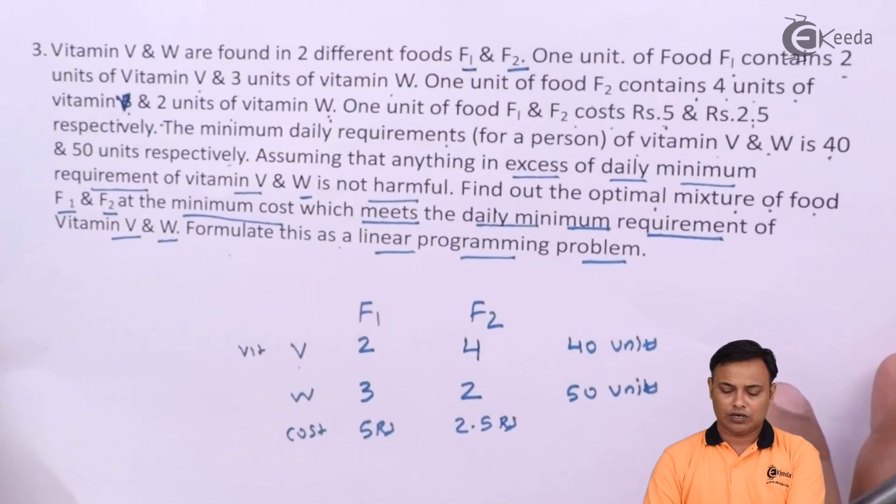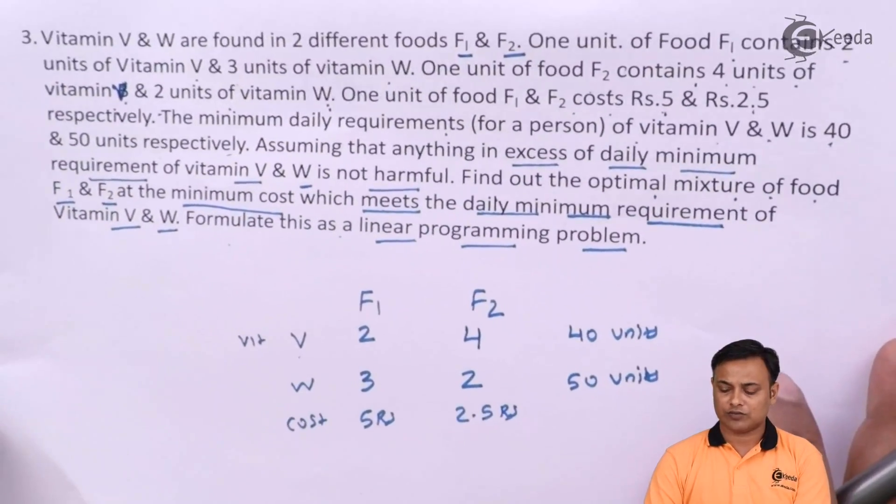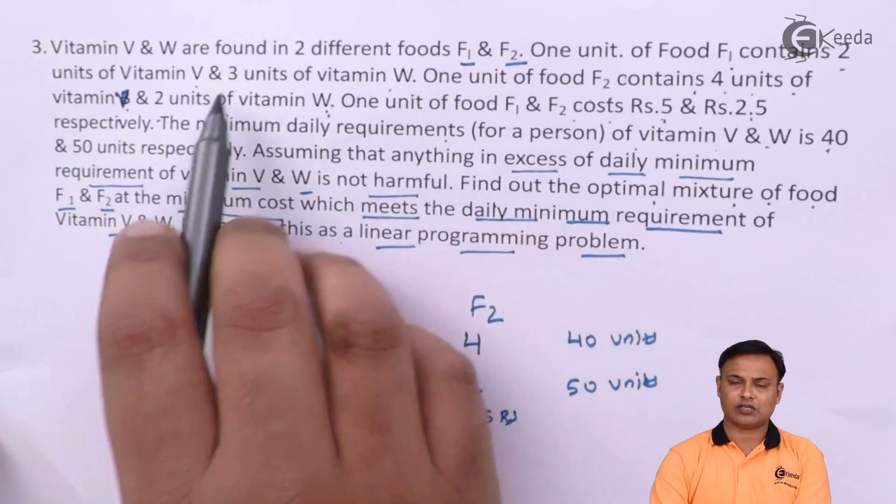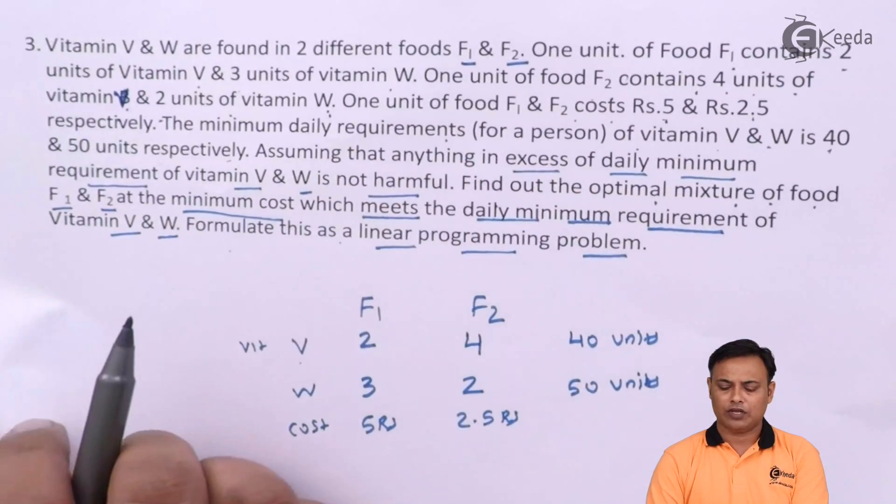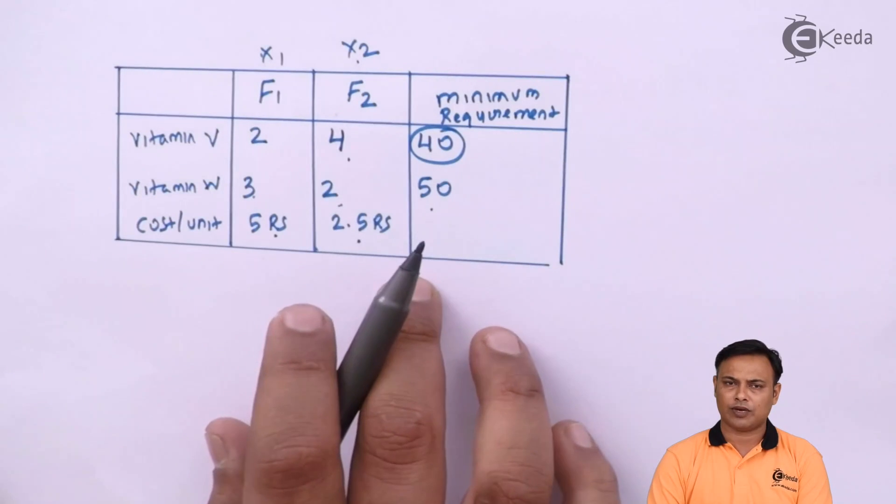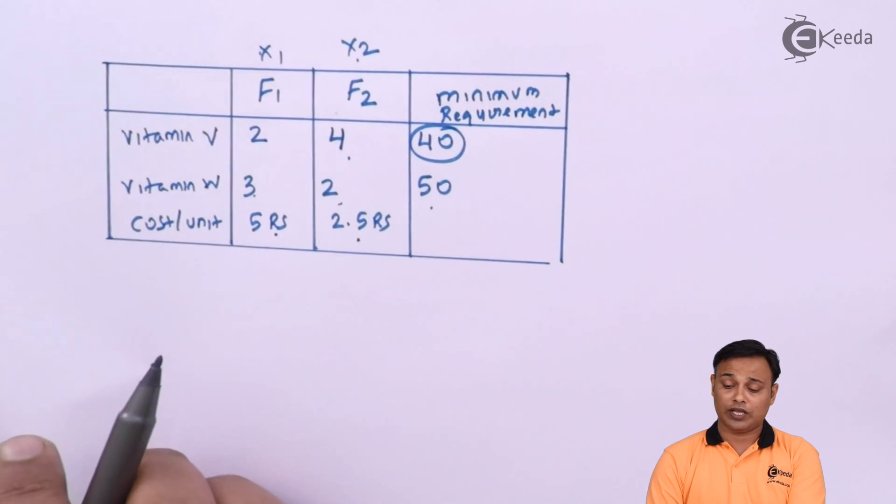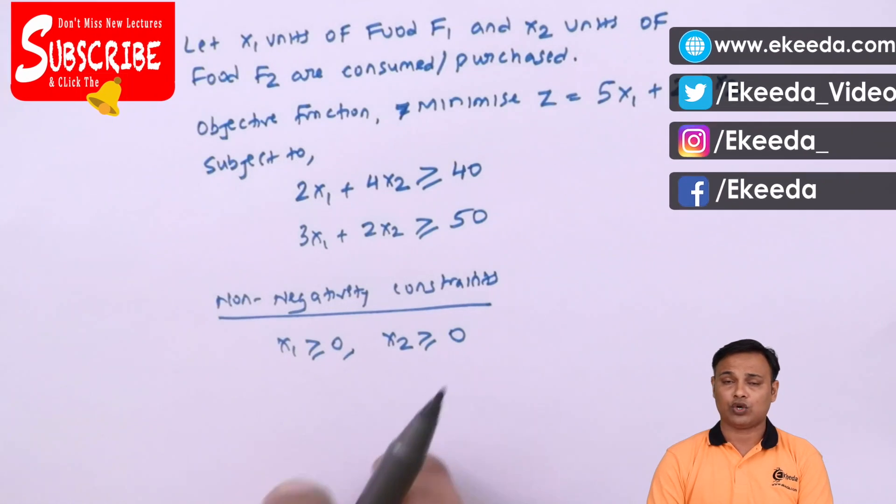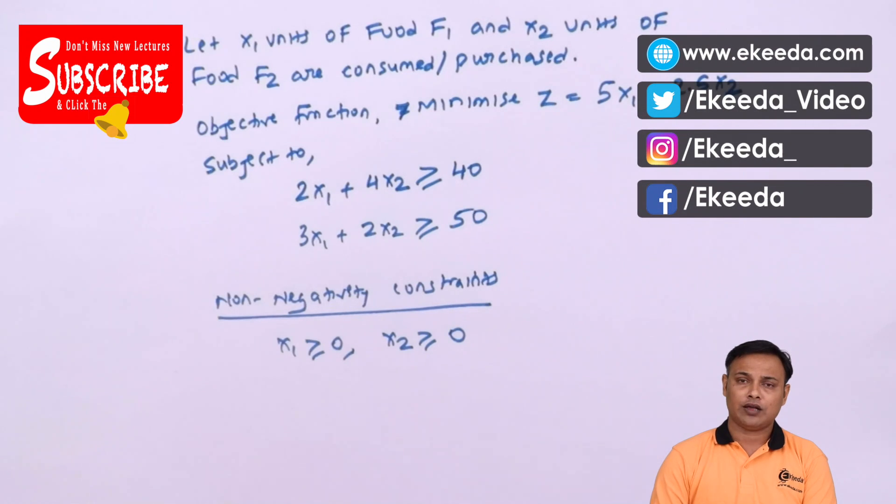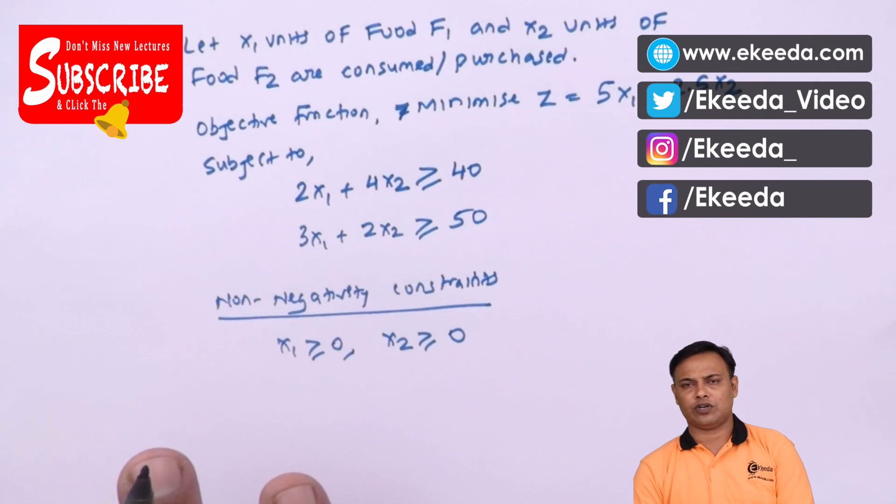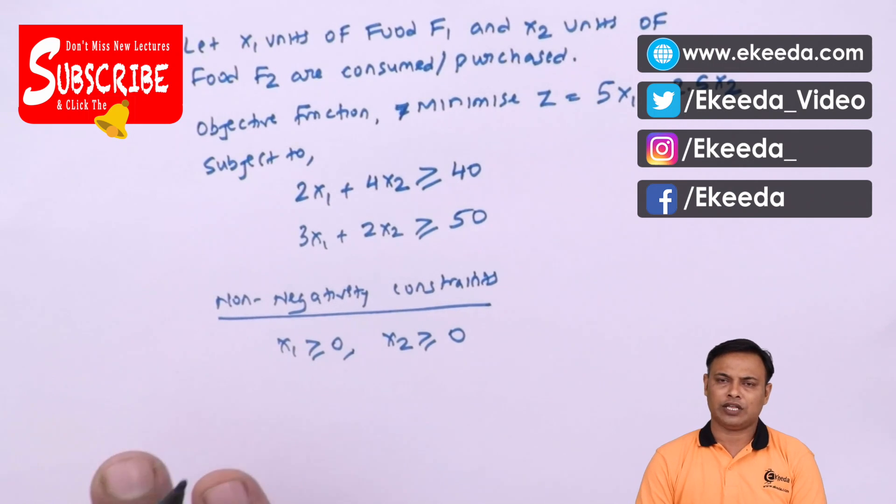This was my original question. This was a problem based on food consumption. We have got two products, F1 and F2. And then based on the information given in the problem, we first formulated the problem. Once the problem was formulated, then we actually converted this into a linear programming model or a linear programming problem. Thanks for watching this video. Do subscribe to our channel, eKidha.